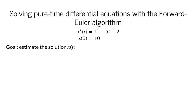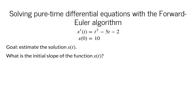We know we must start at x of 0 equals 10. The next question is to determine how fast x of t is changing at t equals 0. This rate of change is simply the slope or derivative of the function x of t at the initial time t equals 0. We can calculate this derivative directly from the differential equation by plugging in t equals 0. We calculate that x prime of 0 is 0 cubed minus 5 times 0 minus 2, or negative 2.